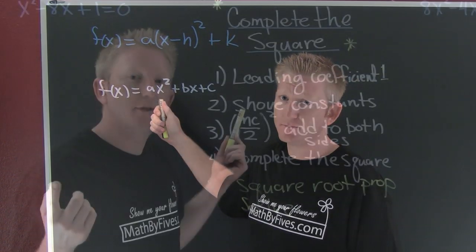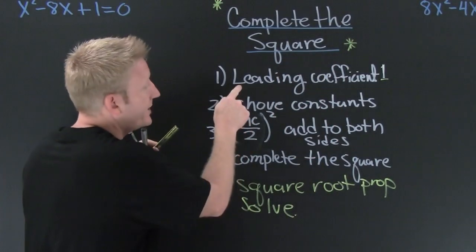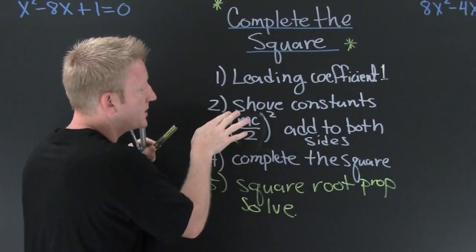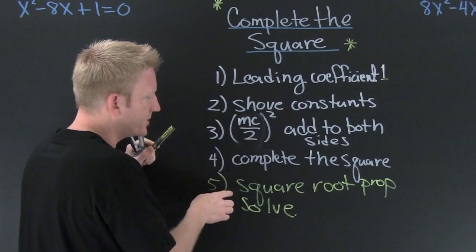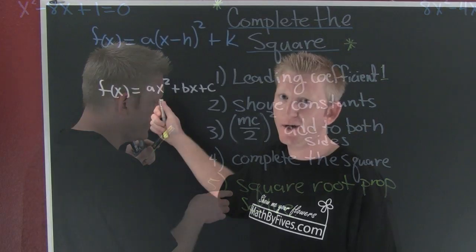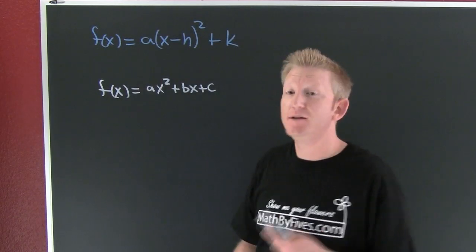Remember how to complete the square: leading coefficient one, shove the constants, half the middle coefficient squared, add that to both sides, complete that square, use the square root property and solve.